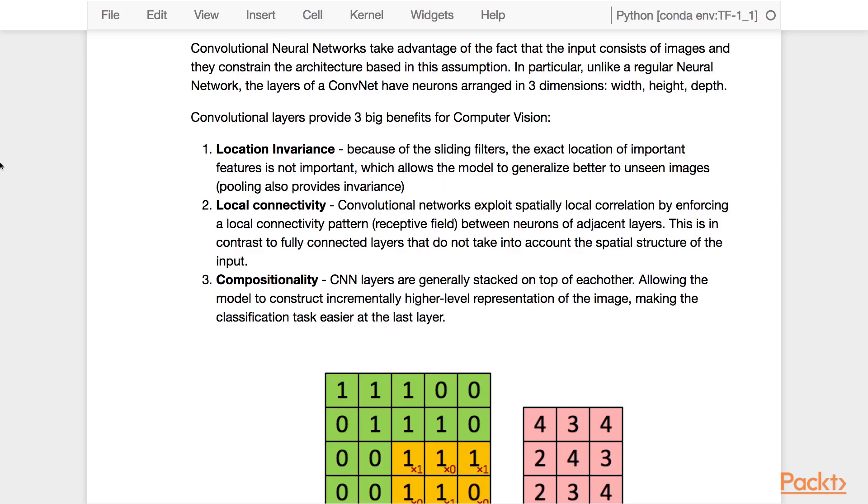Two, local connectivity. Convolutional networks exploit spatially local correlations by enforcing local connectivity patterns in the receptive field between neurons of adjacent layers. This is in contrast to fully connected layers that do not take into account the spatial structure of the input.